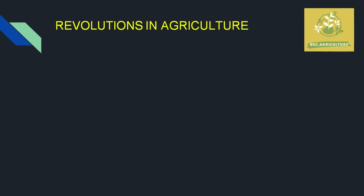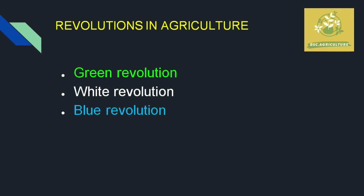The important agricultural revolutions are: the Green Revolution for rice and wheat, the White Revolution for milk, the Blue Revolution for fish, and the Yellow Revolution for oil seeds. These revolutions created maximum production in a country within a limited period of time. Detailed notes are available in the description link.